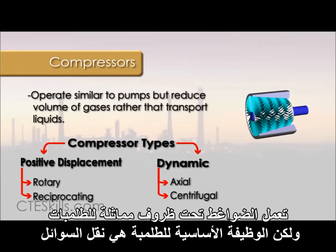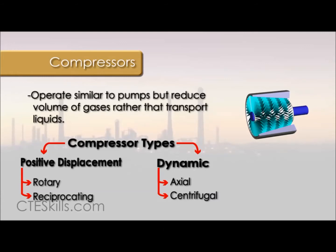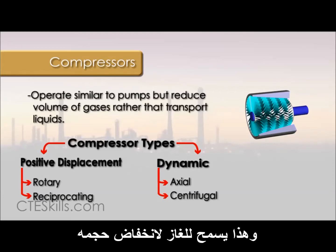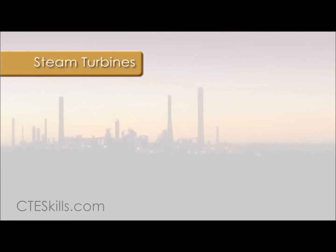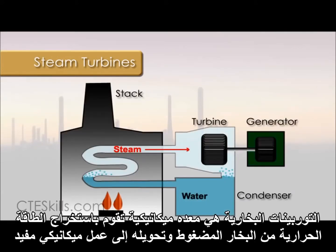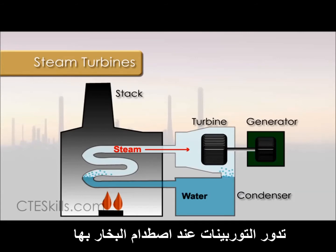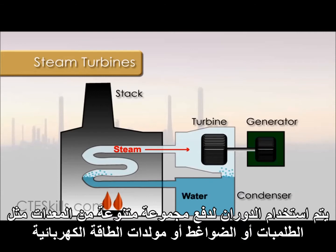Compressors act under similar conditions as pumps. However, the primary function of a pump is to transport fluid. Compressors generally push gases. Since gases are compressible, this allows the gas to be reduced in volume. A steam turbine is a mechanical device that extracts thermal energy from pressurized steam and converts it into useful mechanical work. The turbine will rotate as steam strikes it. The rotation is then used to drive a variety of shaft-driven equipment such as pumps, compressors, or electric power generators.